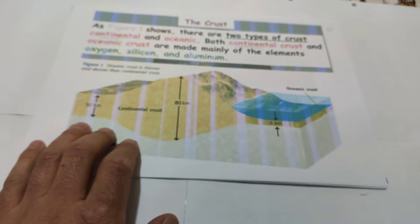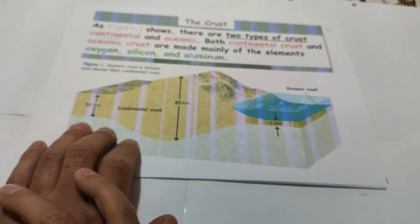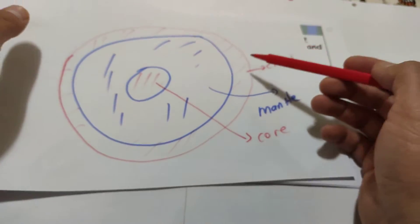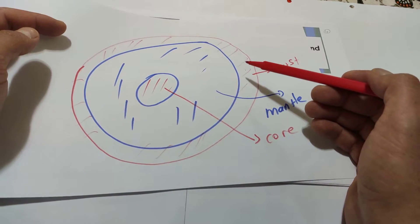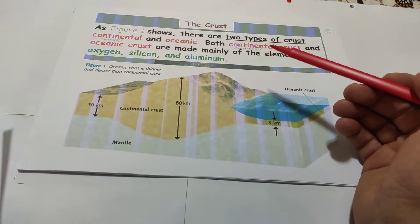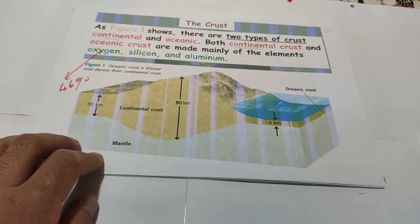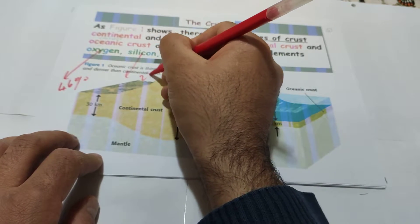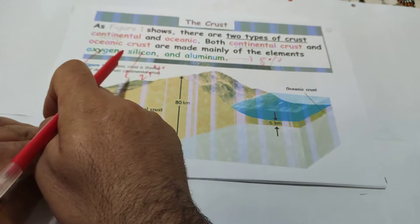The first layer of earth - the crust. There are two types of crust: continental and oceanic. Both continental crust and oceanic crust are made mainly of the elements oxygen, silicon, and aluminum. The crust layer contains all elements - more than 92 elements naturally - but mostly it is made up of oxygen at 46%, silicon at 27%, and aluminum at 8%.